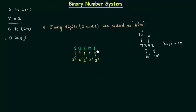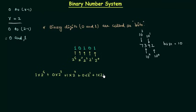These are the weights for each position, and we can write the binary number 10101 as: 1×2⁴ + 0×2³ + 1×2² + 0×2¹ + 1×2⁰. We can definitely write this number in this form. If we simplify this, we will get the decimal equivalent of this binary number.